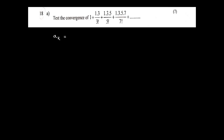Let Ak equal the kth term. The first term is 1/1!, the second term is (1·3)/3!. The numerator follows the pattern 1, 3, 5, etc. — odd numbers. So the kth term is the product of odd numbers up to (2k−1), divided by (2k−1) factorial.